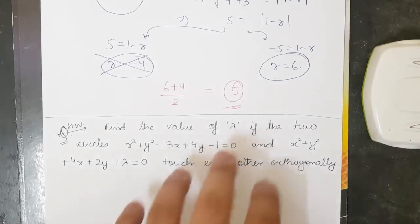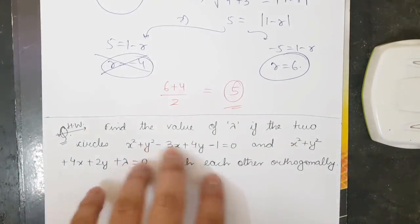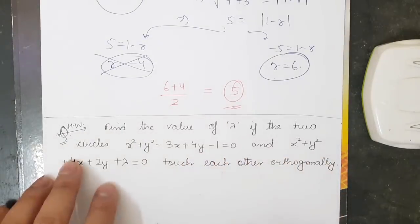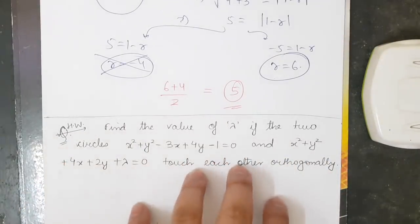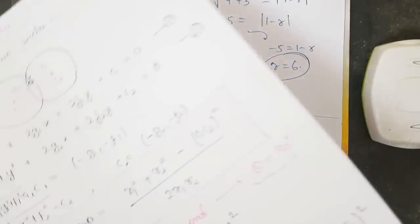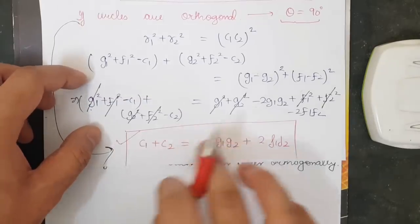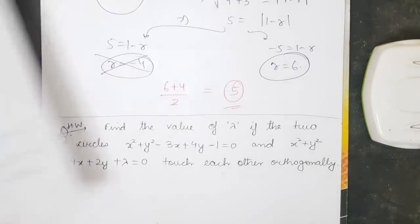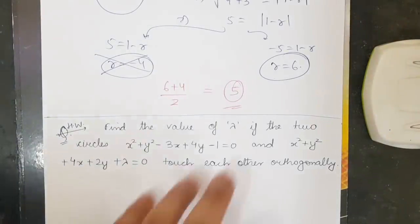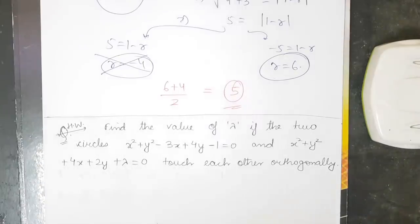The homework question: find the value of λ if the two circles x²+y² − [some expression] and x²+y² + 4x + 2y + λ touch each other orthogonally. This is a very important question. Please derive it and mention your answer for λ in the comment section. Thank you and all the best!